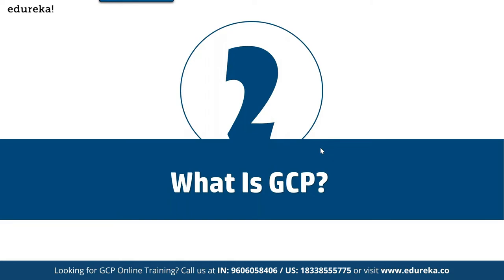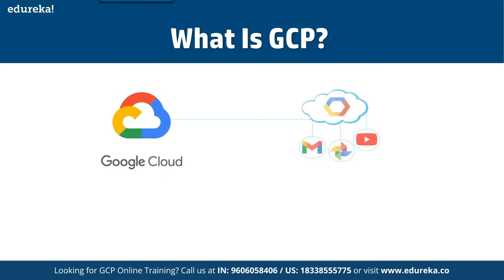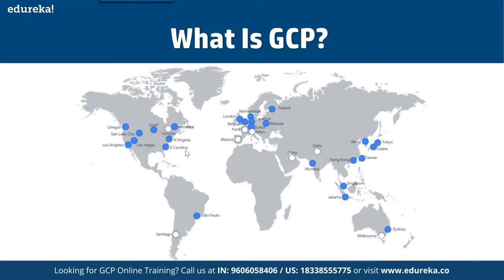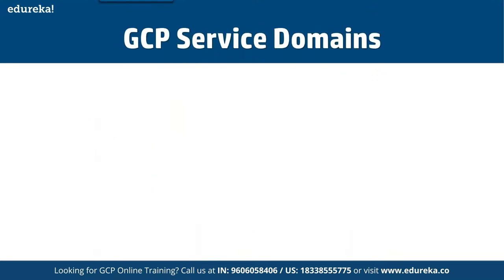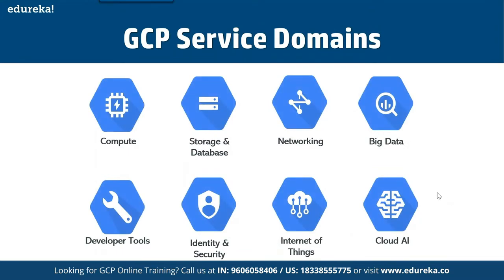GCP stands for Google Cloud Platform. It is a suite of cloud computing services and management tools offered by Google. As of now, Google Cloud services are available in many locations highlighted on the map, and these services will be expanded to more countries over time.